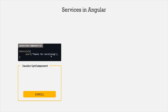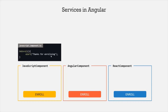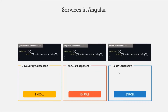Just like this JavaScript component, we have two other components called Angular component and React component, and in these two components also, we have this Enroll button. So when the user clicks on these Enroll buttons, we also want to display an alert message saying 'thank you for enrolling.' In order to do that, we will have to write this same logic in the component class of these two components as well. So here if you notice, we have three components and in the component class of each of these components, we have the same method with the same logic — we are repeating the same code in three different components. So if we have 50 courses in our application and each course has this Enroll button, then we will have to write this same logic in the component class of each of those courses.